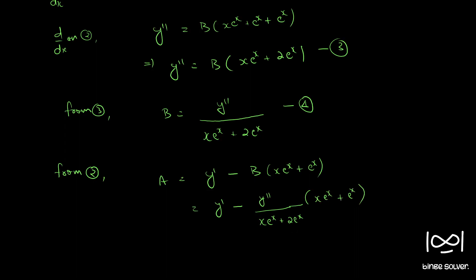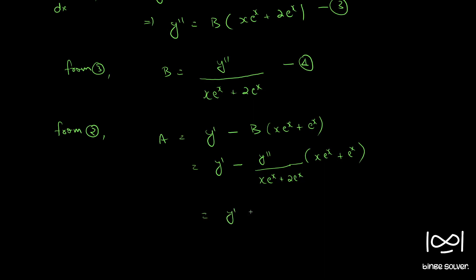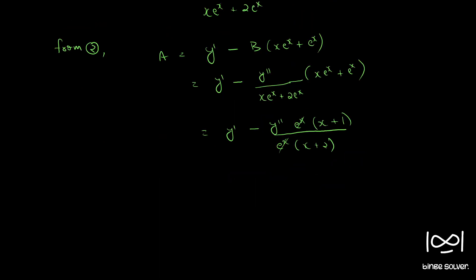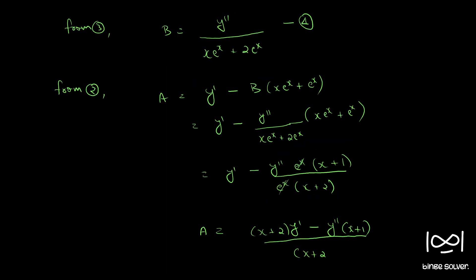Before expanding, we can simplify by taking e^x outside as a factor of (x+1) in the numerator. So the e^x terms cancel out. We can then write: a = [( x+2)y' - (x+1)y''] / (x+2). This is equation 5.